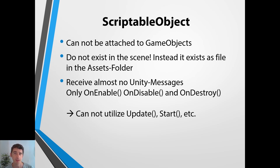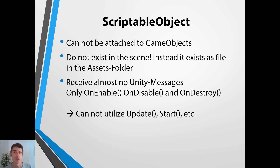ScriptableObjects cannot utilize Update or Start, etc. But that's a good thing, because they're only data containers — they should not contain functionality. If they received Update methods, you'd be very tempted to implement functionality in these objects, but that's not what they're built for. They are built to force the programmer to separate data from functionality. And if you look at the future of Unity — the ECS, the Entity Component System — they try to enforce this kind of thinking even more: separating data very harshly from functionality.